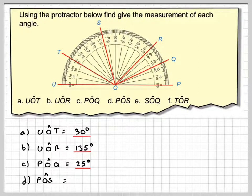And D, POS, so again, we're going to measure on the outside of the protractor, so that's going to be 105 degrees. Again, acute, obtuse.